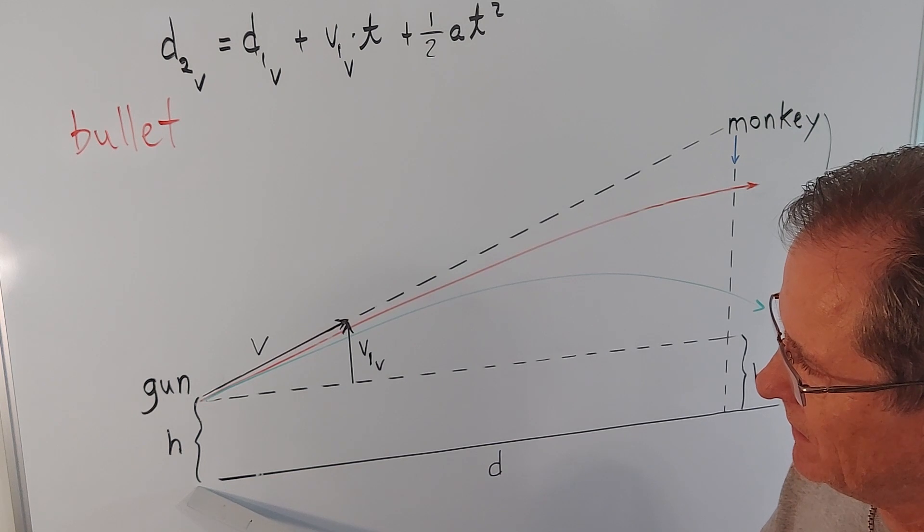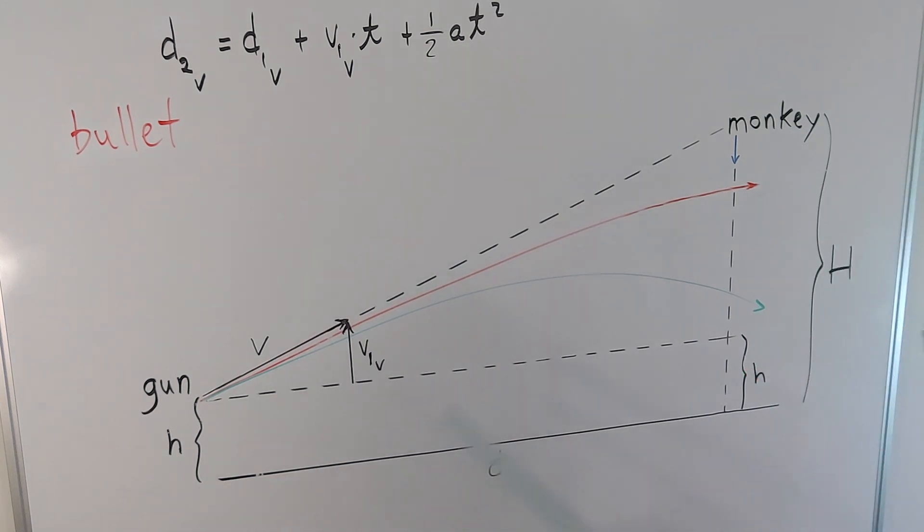The gun is at a height little h above the ground. The monkey is at a height capital H above the ground. The distance from the gun to the tree is d.